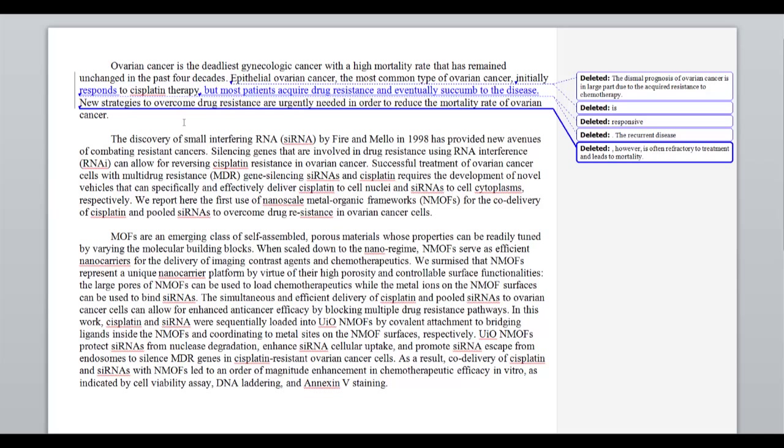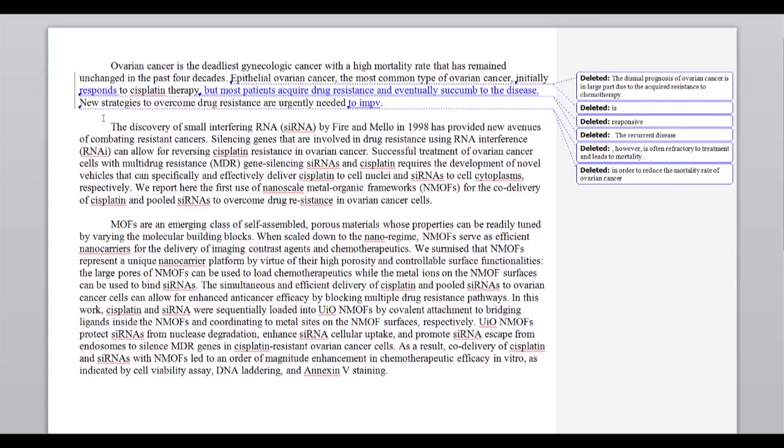New strategies to overcome drug resistance are urgently needed. And so again, that conveys that idea that was in the second sentence that I deleted. So we don't really need that. In order to reduce the mortality rate of ovarian cancer, we already know we're talking about reducing mortality in ovarian cancer. So I think we can just change this urgently needed to improve prognosis. Since I cut the word prognosis, we can use it here.